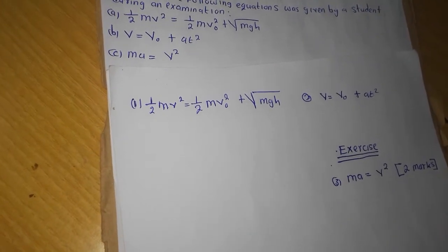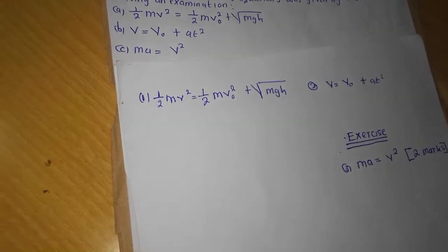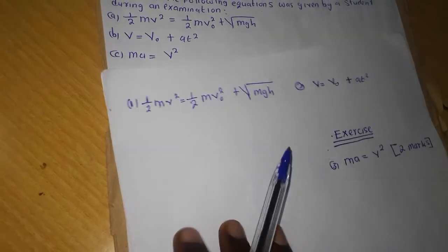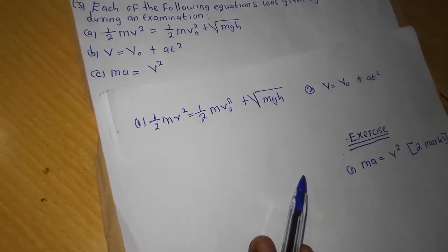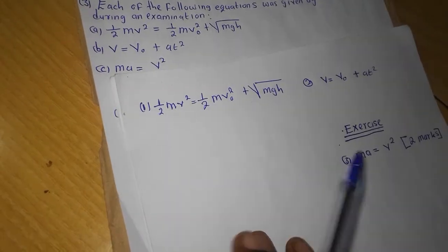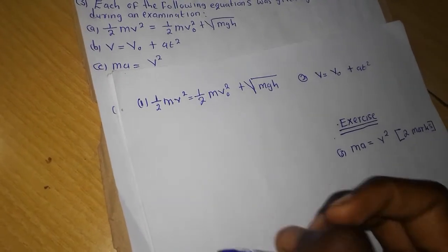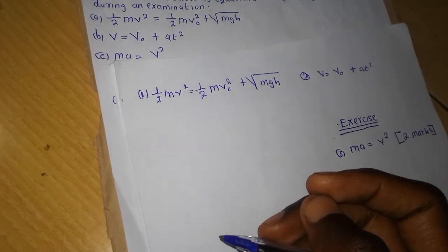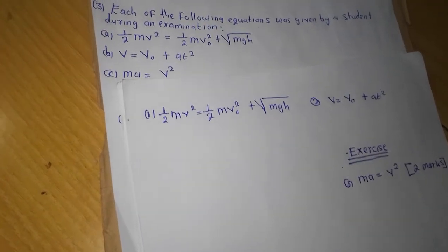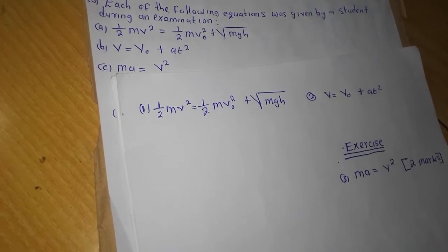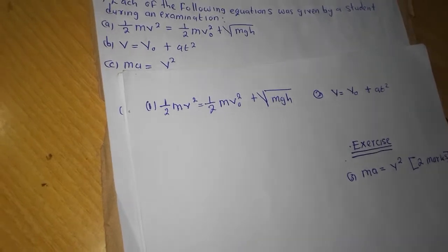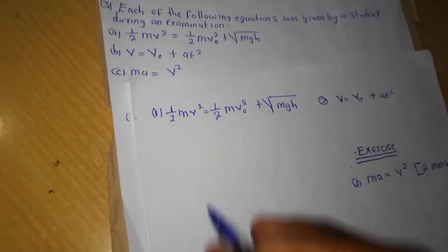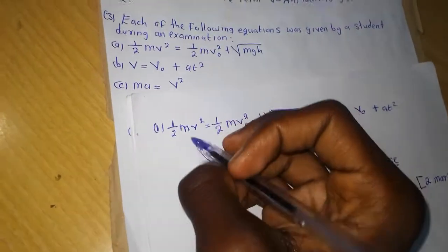There's a question here. We are asked to prove whether this equation is dimensionally consistent — if it's correct. In the first place, remember that numbers are not part of the dimensions, so we don't consider the numbers.